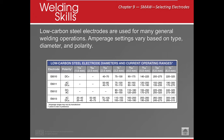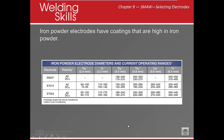125 amps doesn't mean you have to weld exactly there, but it gives you a jumping-off point. Looking at the chart for 6010, 6011, 6013, or even 7024, the 1/8-inch electrode puts you right in the middle of the amperage range, allowing you to adjust up or down from there.